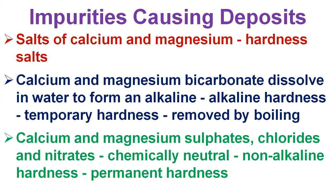Alkaline hardness salts decompose upon heating, releasing carbon dioxide and forming a soft sludge which settles out. These are called temporary hardness — hardness that can be removed by boiling. Calcium and magnesium sulfates, chlorides and nitrates, when dissolved in water, are chemically neutral and are known as non-alkaline hardness. These are called permanent hardness and form hard scales on boiler surfaces which are difficult to remove. Non-alkaline hardness chemicals fall out of solution due to reduction in solubility as temperature rises, by concentration due to evaporation, or by chemical change to a less soluble compound.